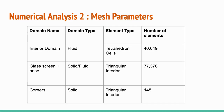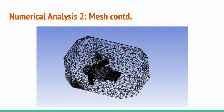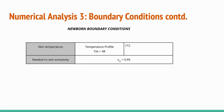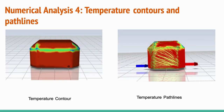The mesh parameters for various domains are given as shown. This is the final meshing of the baby plus incubator. These are the boundary conditions on air and the newborn baby. The temperature contours and temperature path lines in the incubator subject to the above boundary conditions are as shown. The swirling path lines are due to convective heat transfer.